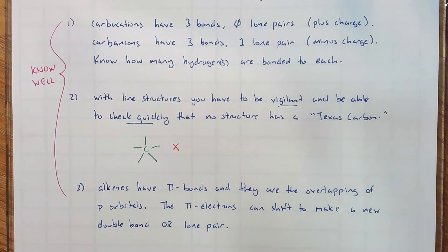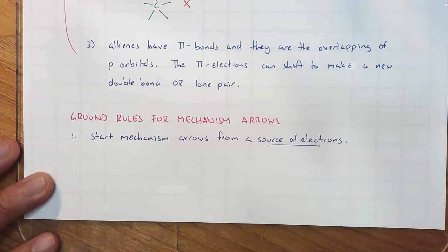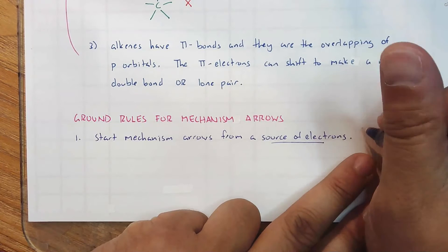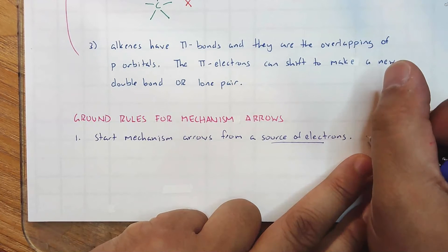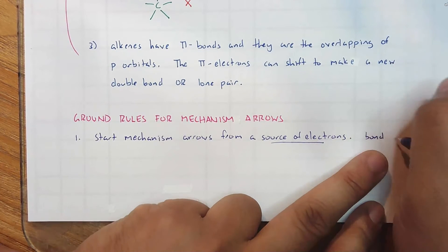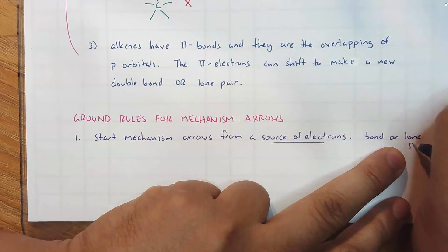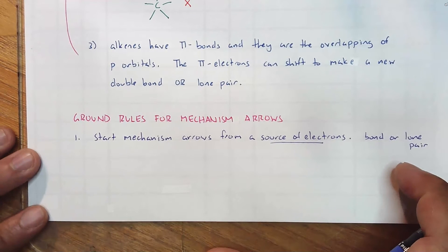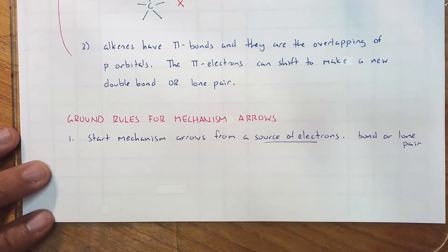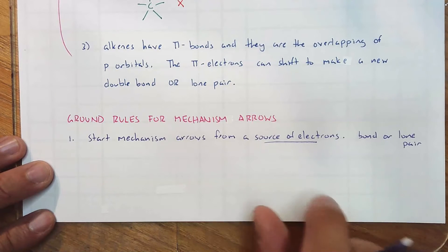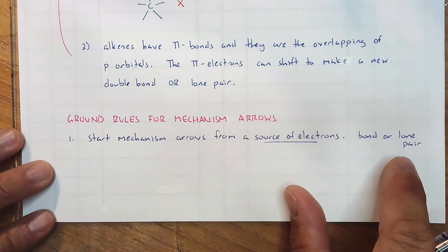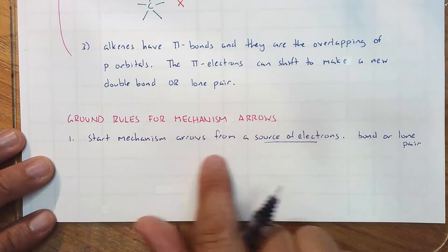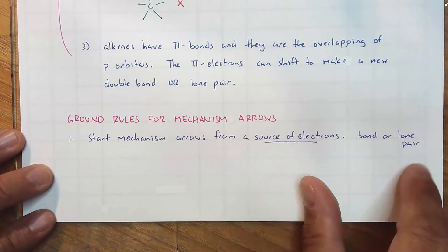Let's talk about the ground rules for mechanism arrows. Number one: start mechanism arrows from a source of electrons. That could either be a bond or a lone pair. Later on, much later in the semester, we will see an instance where we can move a single electron or a radical. But for now, all mechanism arrows should start from a bond or lone pair.